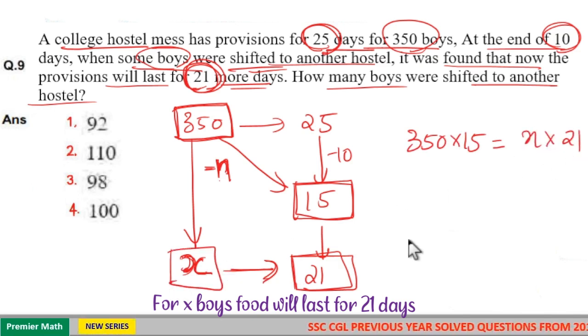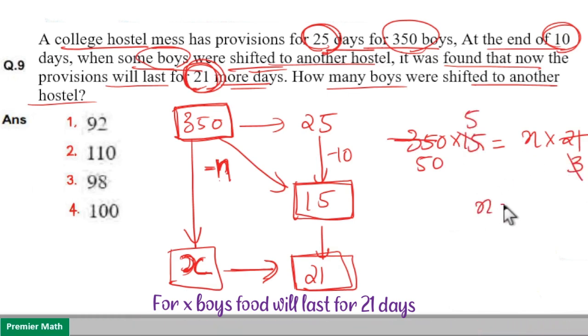Now, you can find the value of x. That is, 7 goes 5 times in 50, 7 goes 3 times in 21, 3 goes 5 times in 50. So x here is equal to 5 into 50, 250.